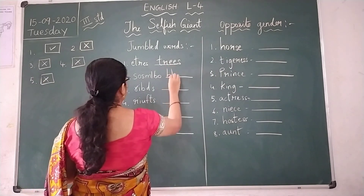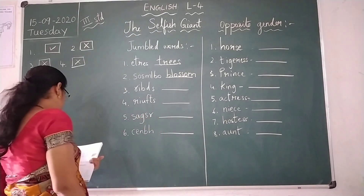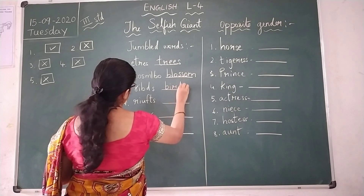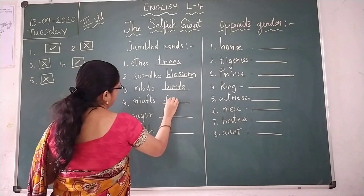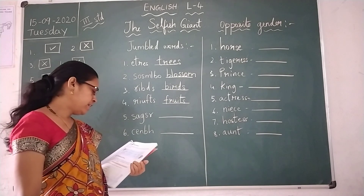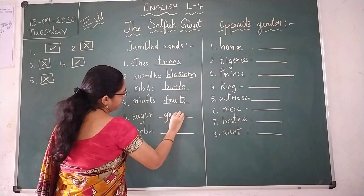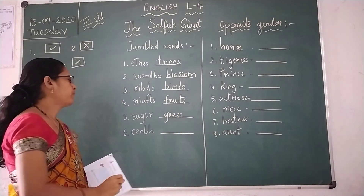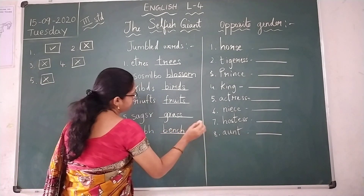The answer is blossom — B-L-O-S-S-O-M. Third one is B-I-R-D-S — birds. Fourth one is fruits — F-R-U-I-T-S. Fifth one is grass — G-R-A-S-S. And the next one is bench — B-E-N-C-H. Write all these answers in your textbook after unscrambling.